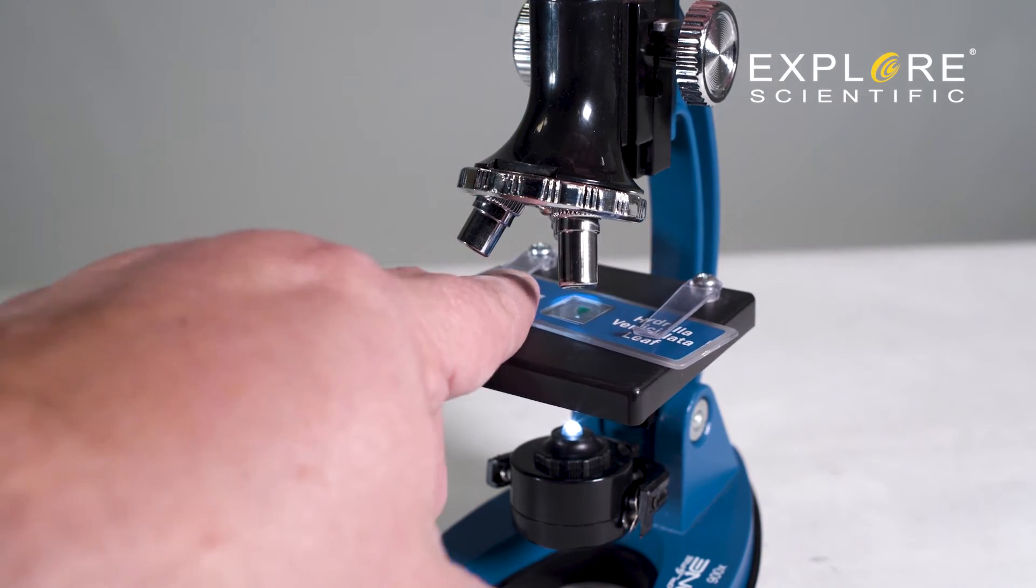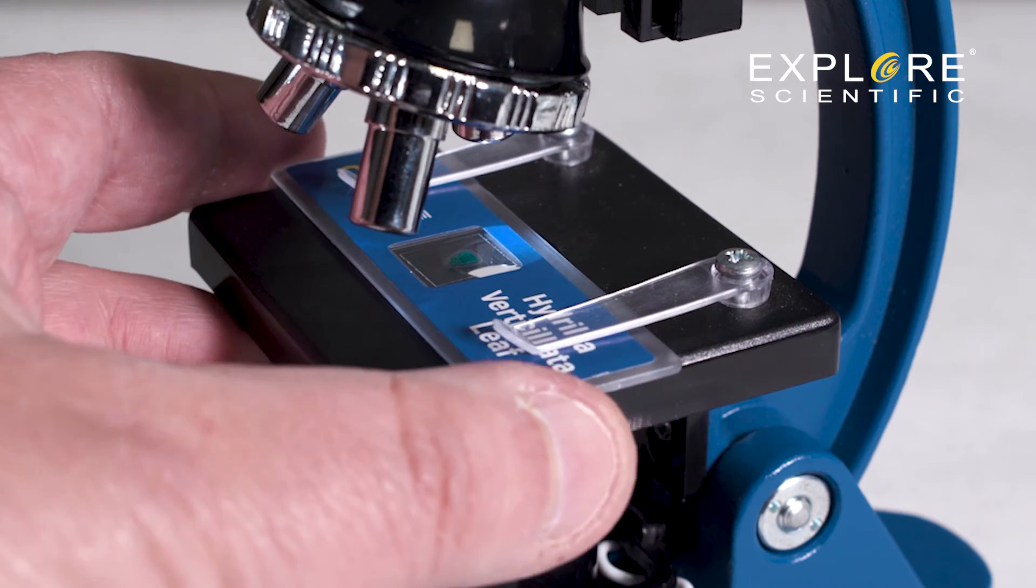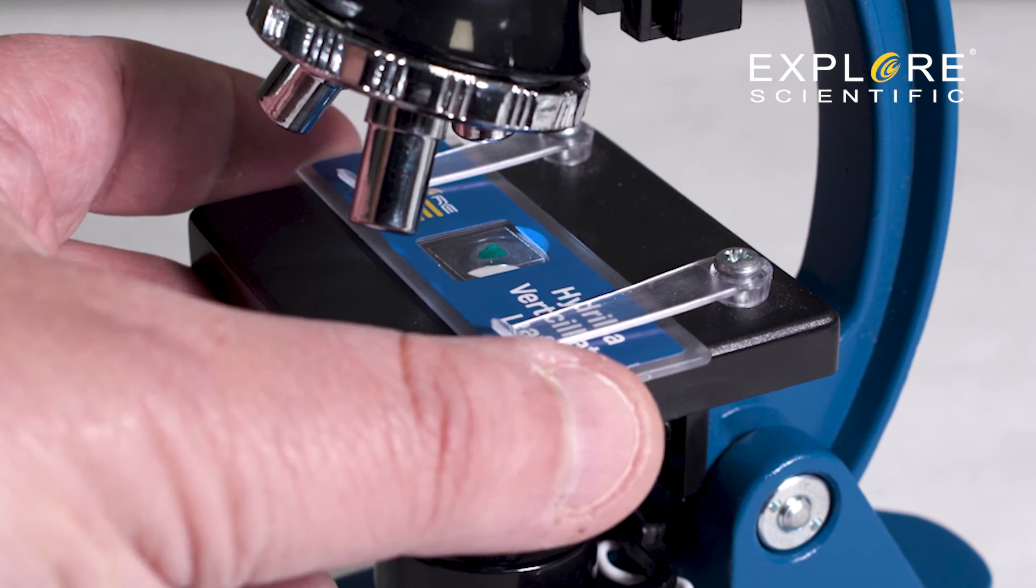Place the prepared slide on the stage, being sure to get it under the clips. Adjust the positioning so that the edge of the specimen is halfway across the opening of the stage, the hole where the light shines through.